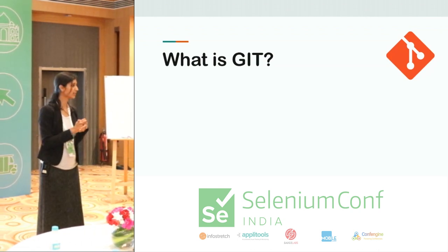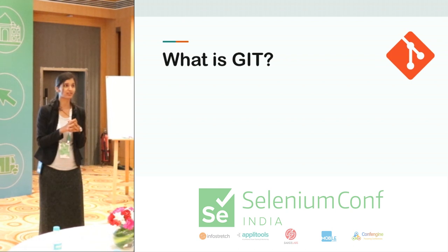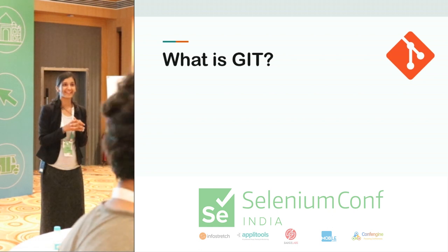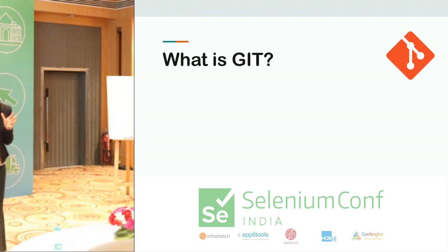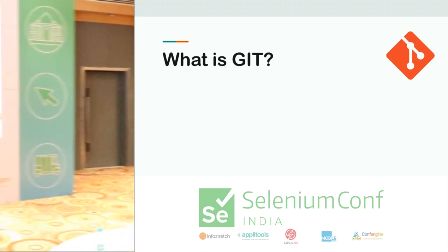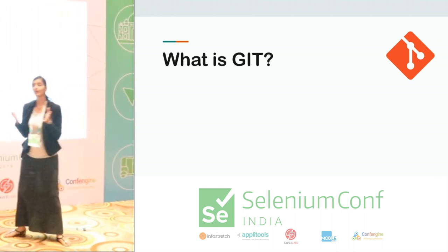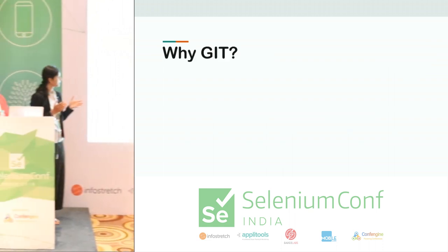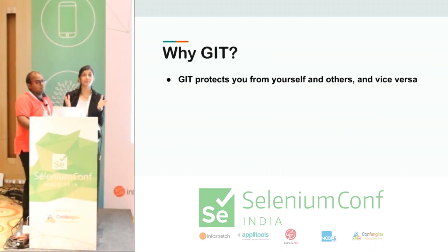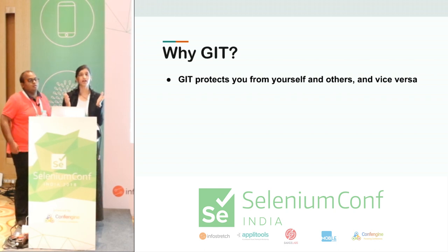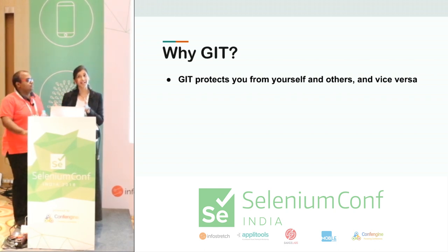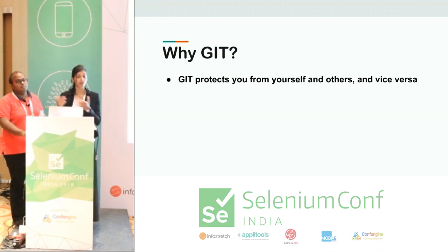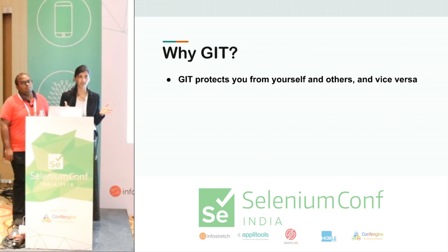If I have to explain this to some kid and I say 'version control,' would you understand? So basically, we are coming to the point of understanding why we actually need something like Git. Git actually helps you to make mistakes but still fix them.